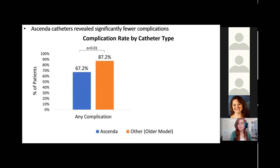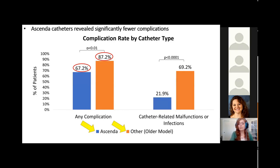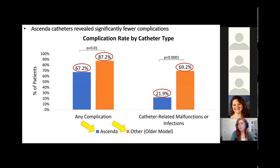We then compared the different model types of catheter. The Ascenda catheter is the newer model shown in blue, and all older models were represented in orange. Patients who had an Ascenda catheter had significantly fewer complications than older model patients. For catheter-related malfunctions or infections, 21.9% of Ascenda patients had a catheter issue, and that was significantly higher for older models.